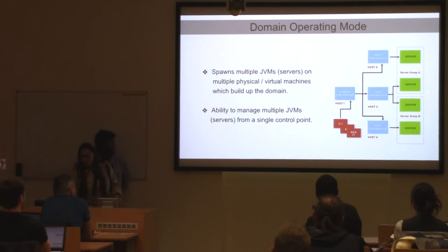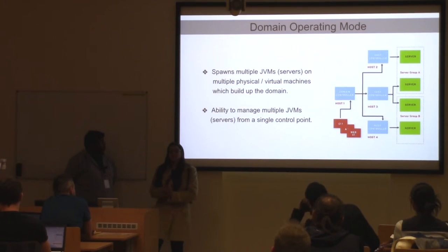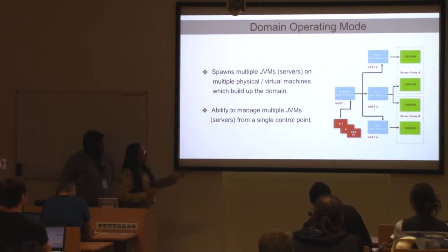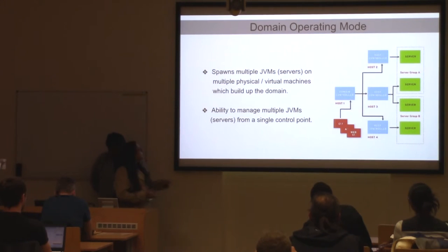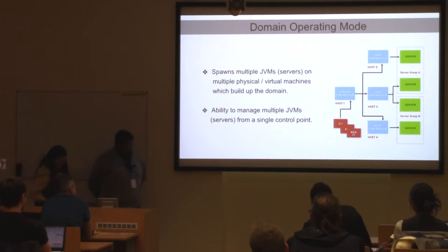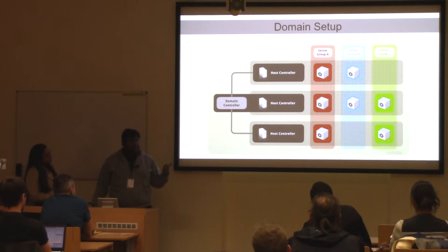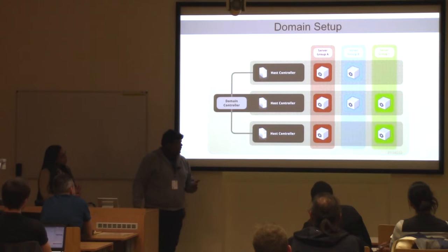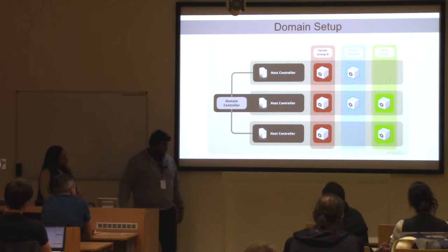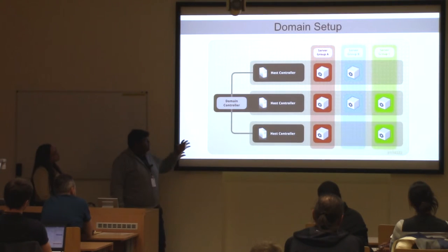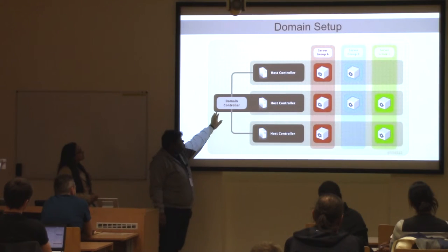Domain operating mode has multiple JVMs. There is a central governance node called the domain controller which manages other host controllers and servers under it, giving it the ability to manage multiple JVMs from a single point of control. Go for standalone mode if you want only one server up and running. For domain mode, if you have multiple servers running across different locations — for example, some in North America and some in Australia — you can manage all servers from a domain controller.